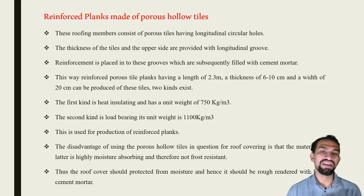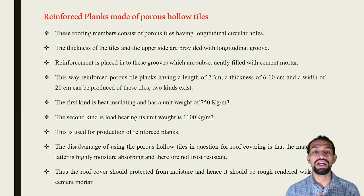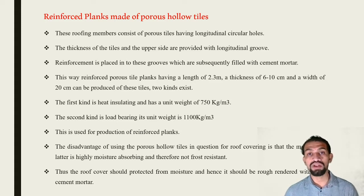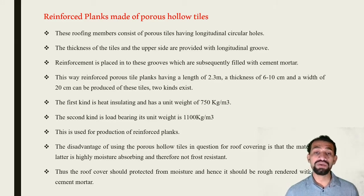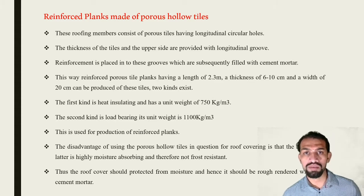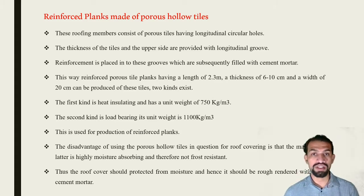There are two types of porous hollow tile planks. The first is the heat insulating type with a unit weight of 750 kg per meter cube, produced by applying heat to settle and harden the sections. The second is the load bearing type weighing from 1100 kg per meter cube, where sections are placed one upon another — with no column sections or reinforcements — and this is called the load bearing type.